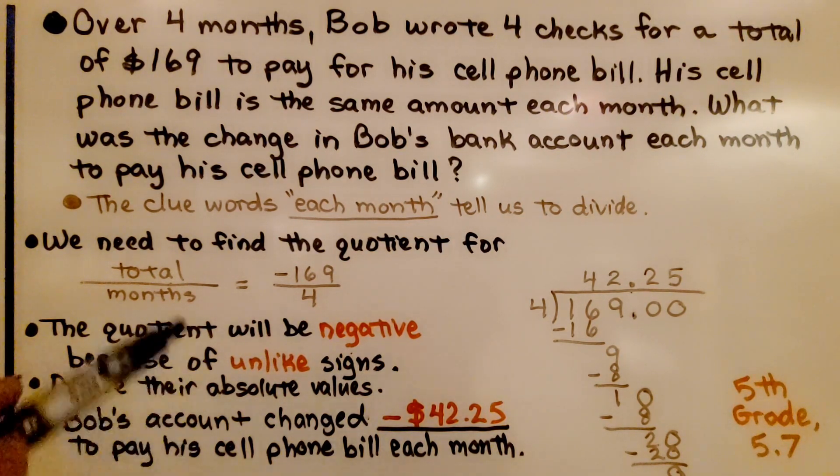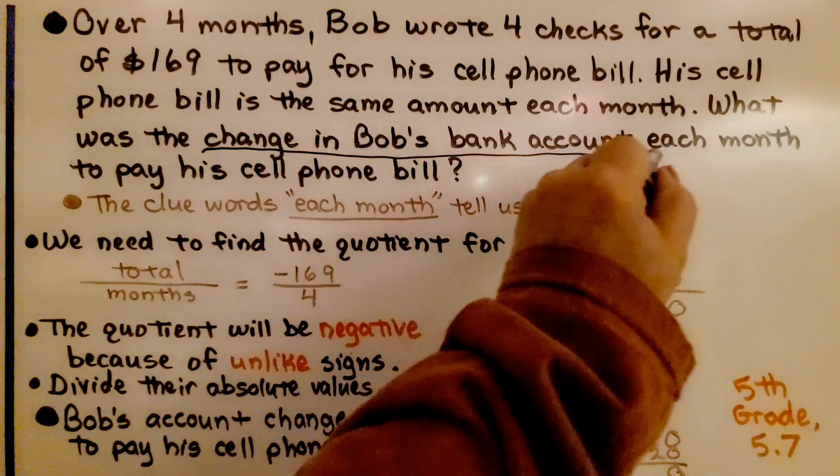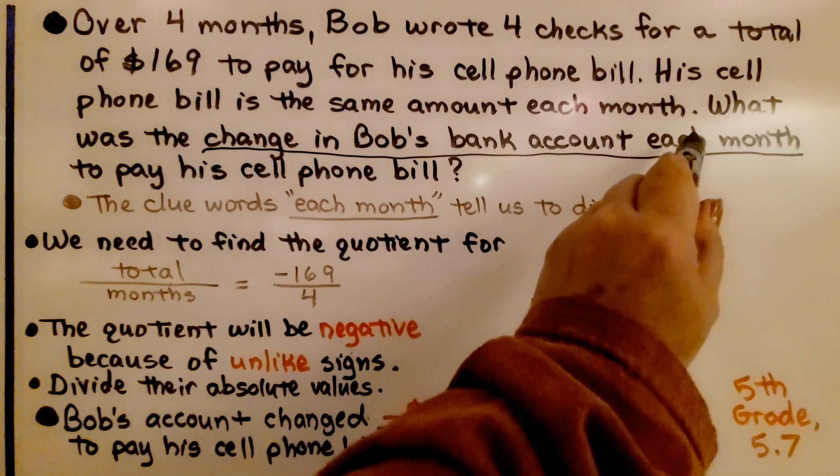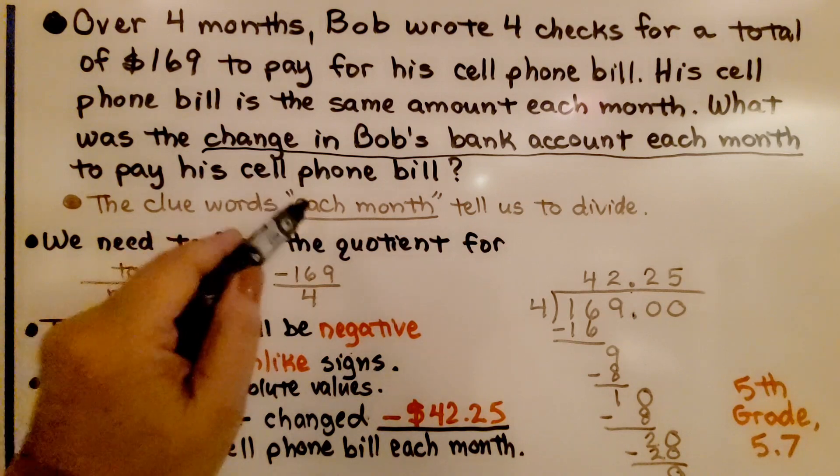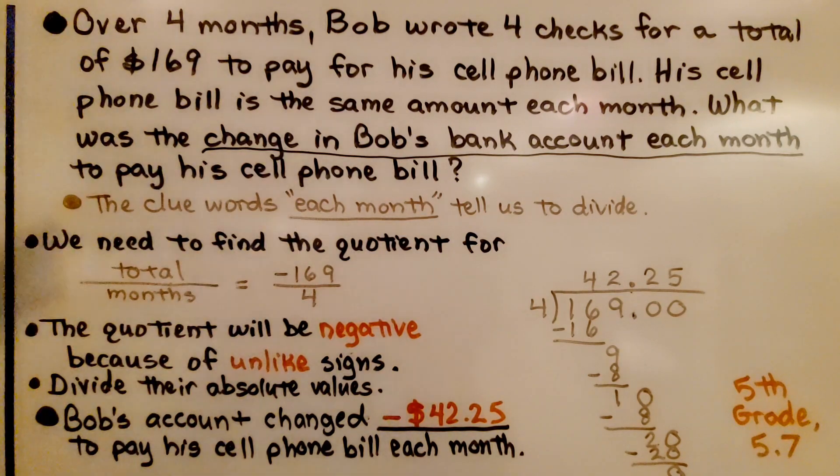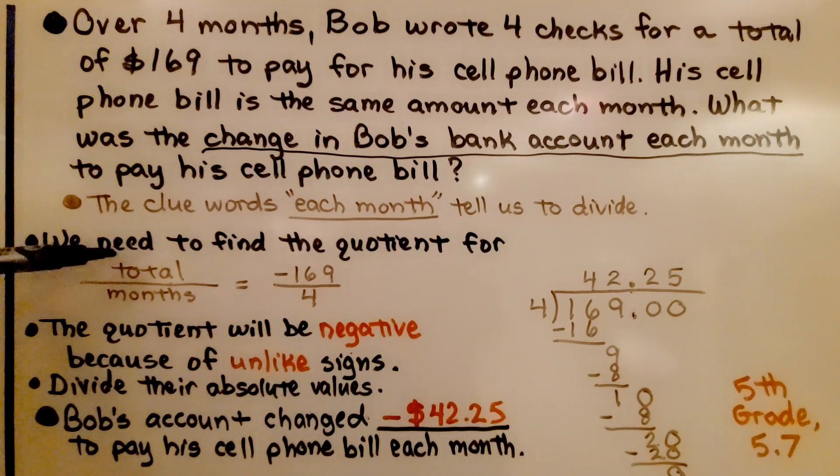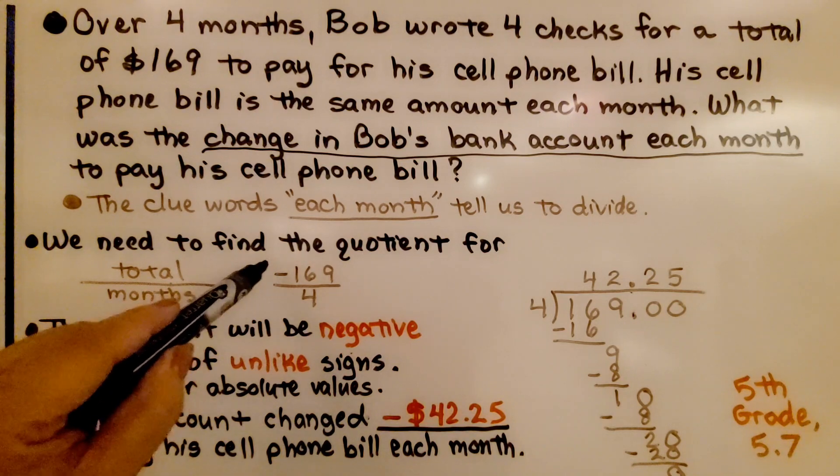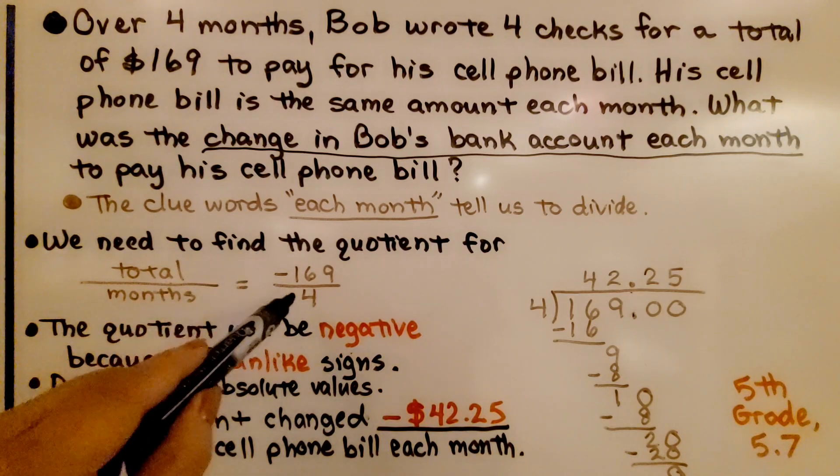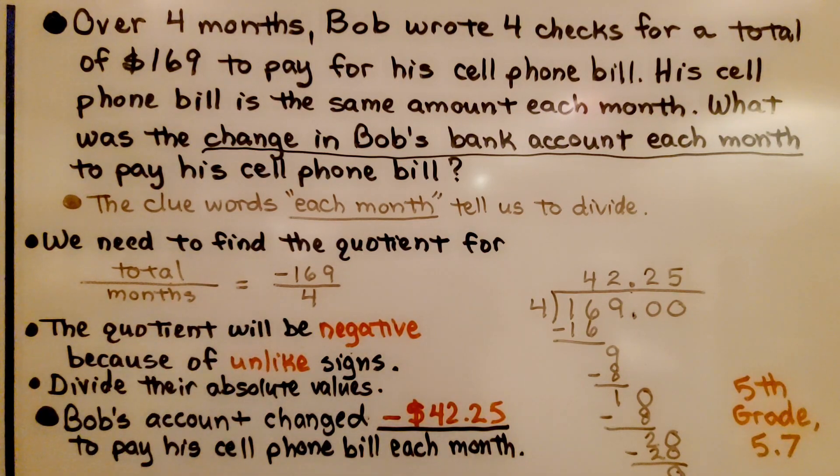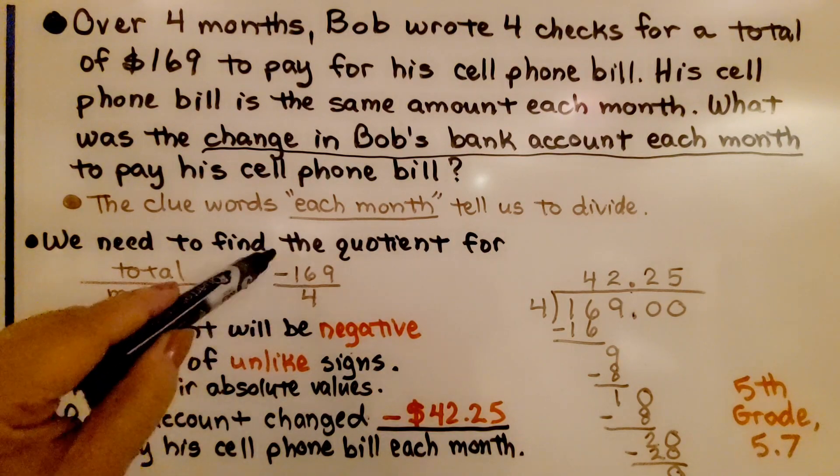We need to find the change in his bank account each month. The clue words 'each month' tell us to divide. We need to find the quotient for the total from his bank account over the number of months. That's negative $169 divided by 4. The quotient will be negative because of unlike signs.